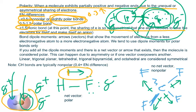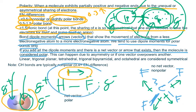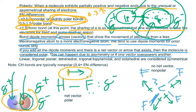We mentioned this arrow — it's called a bond dipole moment. It is indicated by an arrow, or more specifically, a vector. This shows the movement of electrons from a less electronegative atom to a more electronegative atom that wants the electrons more from the bond. We tend to use dipole moments for polar bonds only, because for nonpolar bonds we assume equal sharing. If you add all the dipole moments and there's a net vector that exists, then the molecule is considered polar. In the HF example, since there was only one dipole and nothing canceled out, HF is considered polar.